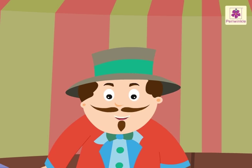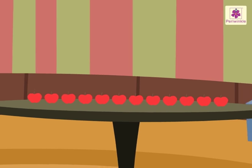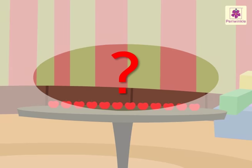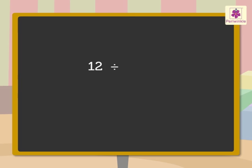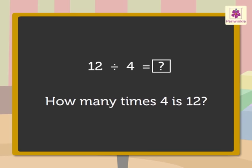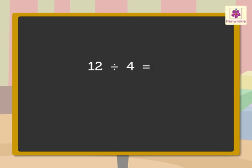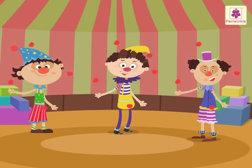One way to write the division sentence is: how many groups? So we can say there are 12 apples — how many clowns will get 4 apples each? To find the answer, we write the division sentence: 12 divided by 4 is equal to how much? How many times 4 is 12? Yes — 3! So 12 divided by 4 is equal to 3. Three clowns will get 4 apples each.